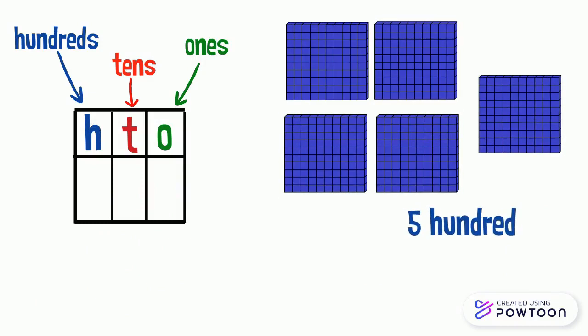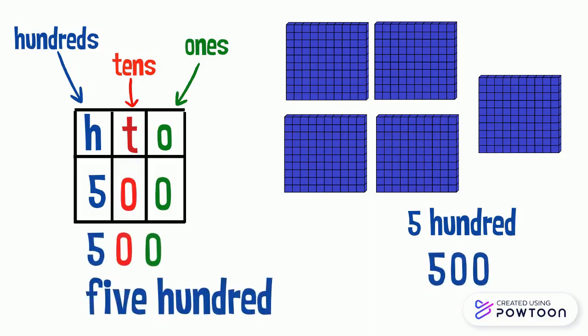Five hundred. We will write five in the hundreds column, and since we don't have ones and tens, we will write zero in each column. So the number is five hundred.